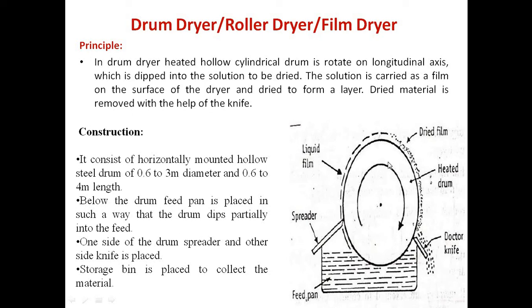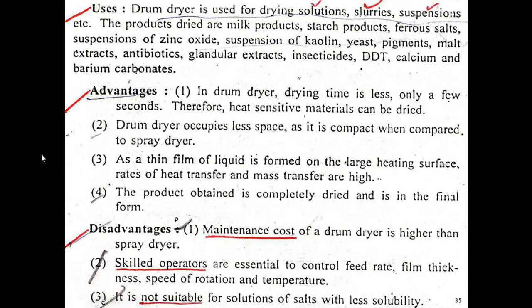If the material remains over the surface of the drum for too long, the properties of the material may get distorted. The drum dryer is used for drying solutions, slurries, suspensions, milk products, starch, water, and different types of suspensions of zinc oxide, kaolin, etc. Even insecticides can also be dried with the drum dryer.